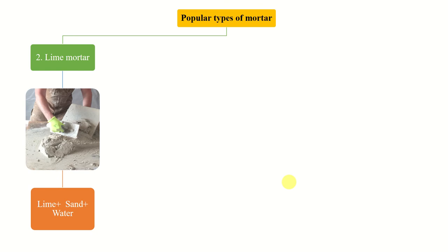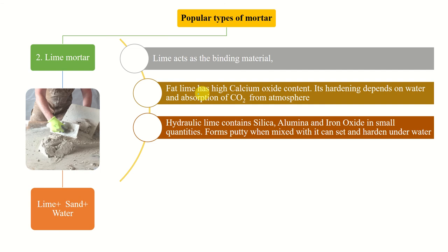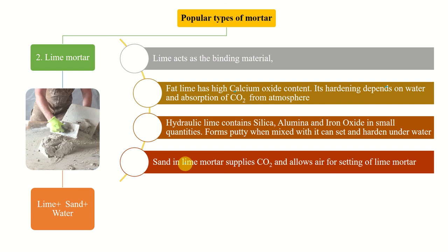The second type is lime mortar. Lime acts as the binding material and we have two types: fat lime and hydraulic lime. Fat lime contains high calcium oxide content and its hardening depends on water absorption and absorption of carbon dioxide from the atmosphere. Hydraulic lime contains silica, alumina, and iron oxide — it forms putty when mixed with water and sets and hardens under water.